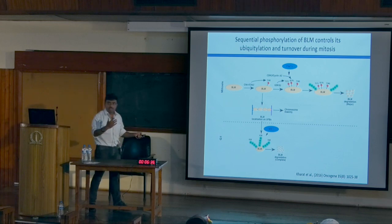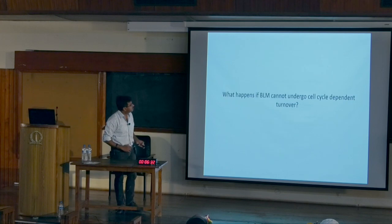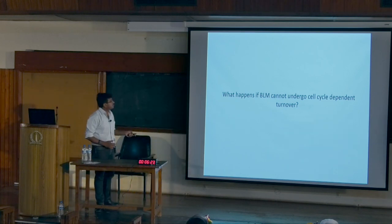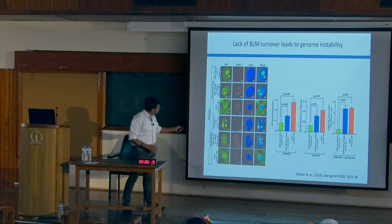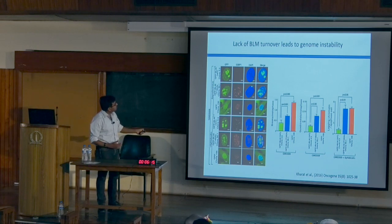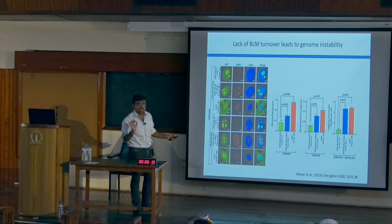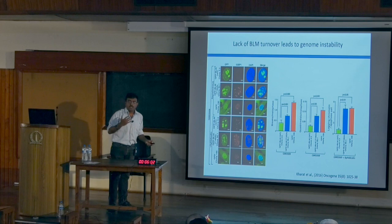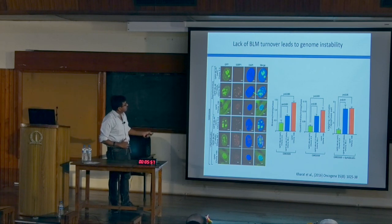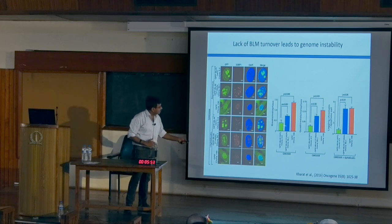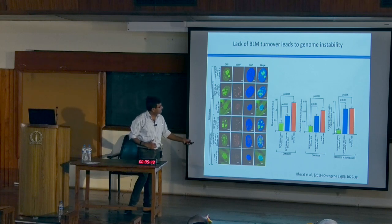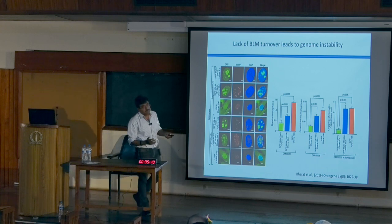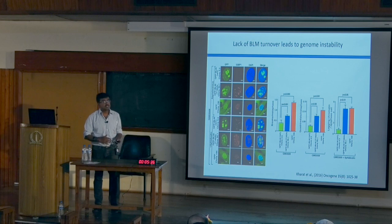So sequential phosphorylation followed by ubiquitylation allows BLM to enter a degradation program during mitosis. But what happens if BLM cannot undergo cell cycle-dependent turnover? Too much of a good thing is bad. In stable cell lines where the key K182 phosphorylation is absent, there is accumulation of inherent DNA damage — more breaks, more quadriradials, and chromosomal lagging. The lack of BLM turnover leads to genome instability, which probably explains why BLM levels are paradoxically elevated at late stages of carcinogenesis.